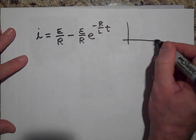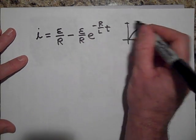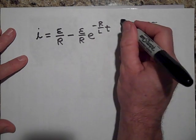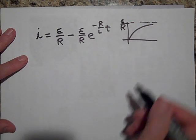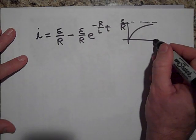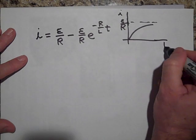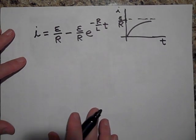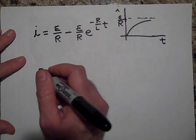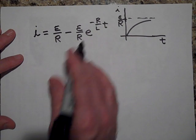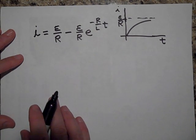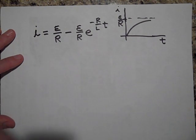It's approaching an asymptote, approaching ε over R. This is a growth, this is an I versus time graph. If it's a decaying graph, then you get a different one.